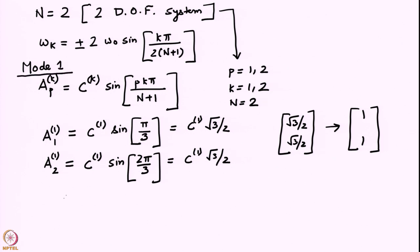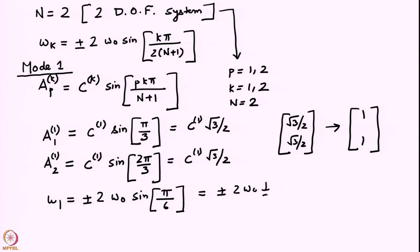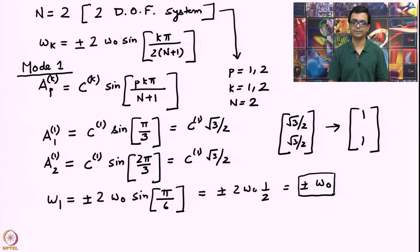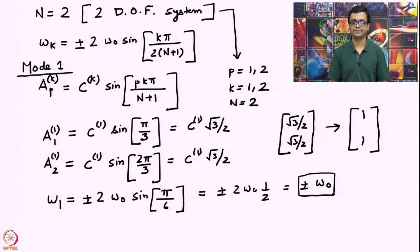The frequency of mode 1 is ω₁ = ±2ω₀ · sin(π/6) = ±2ω₀ · (1/2) = ±ω₀. This turns out to be the same frequency as in the previous example. In this mode, the string between the two masses is not stretched beyond its base state, so the two masses behave as if they are uncoupled, which is why we get this frequency of oscillation.